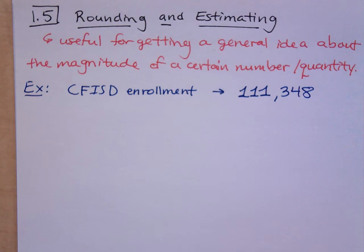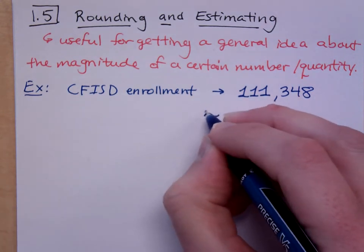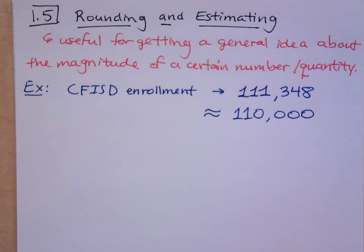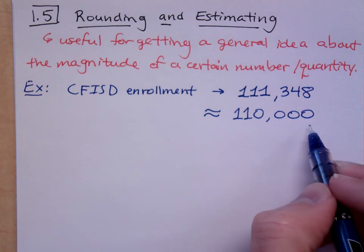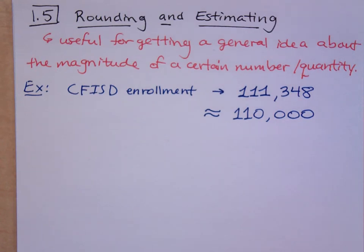You might round — you might say one hundred eleven thousand, or approximately one hundred ten thousand, right? It depends on where you're rounding. I decided to round to the ten-thousand spot, because if I say one hundred ten thousand, it's only missing a thousand three hundred forty-eight students. So it's close enough that I can still communicate the idea about how large the enrollment is at Cypher ISD.